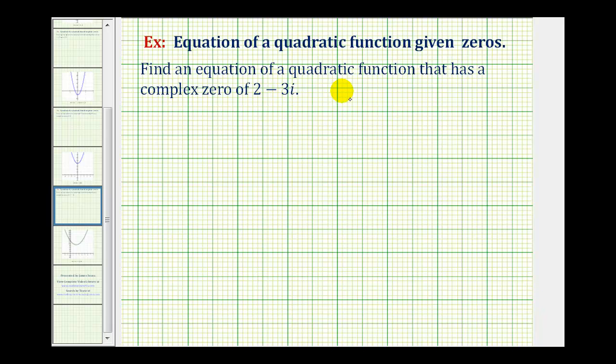We want to find an equation of a quadratic function that has a complex zero of 2 - 3i. Notice in this problem they're only giving us one of the complex zeros, but since complex zeros come in conjugate pairs, if 2 - 3i is a zero of the function, then so is 2 + 3i.